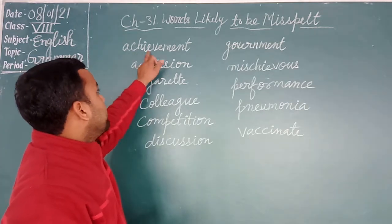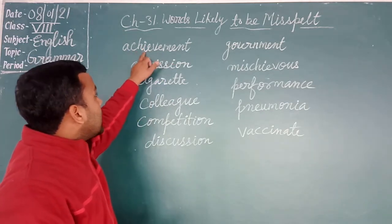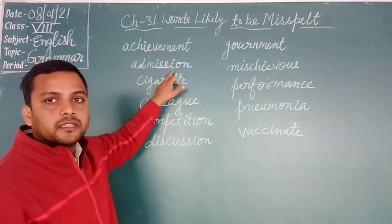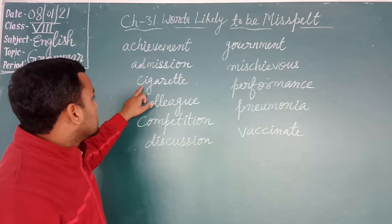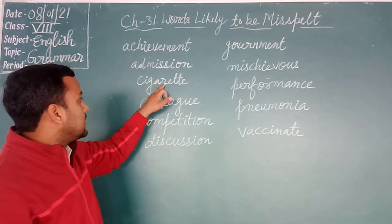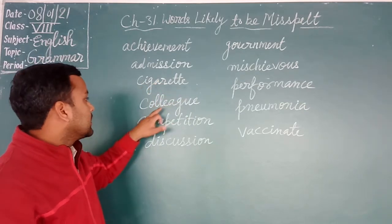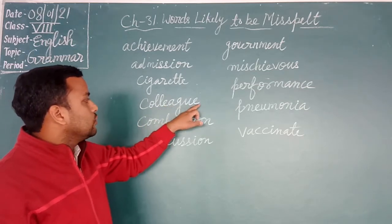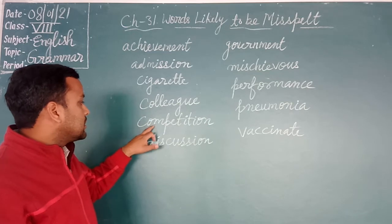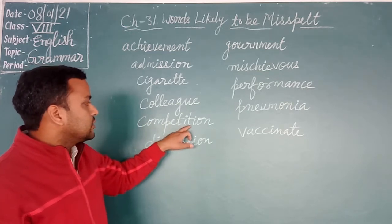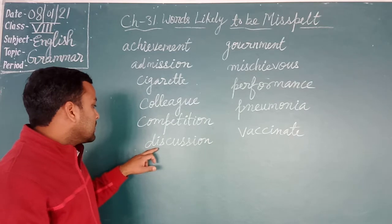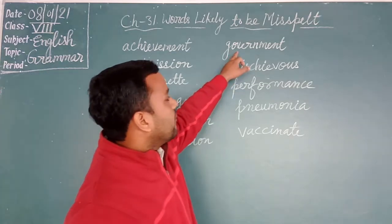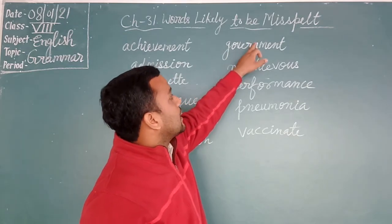Just see here. Achievement: A-C-H-I-E-M-E-H. Admission: A-D-M-I-S-S-I-O-M. Cigarette: C-I-G-A-R-E-T-T-A. Colleague: C-O-L-L-E-A-G-U-E. Competition: C-O-M-P-E-T-I-T-I-O-N. Discussion: D-I-S-C-U-S-S-I-O-N. Dormant: G-O-B-E-R-N.